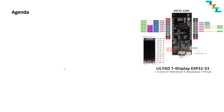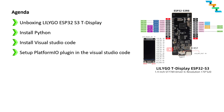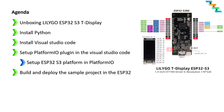We will see the following topics in the video. First, we will see about unboxing the Lilygo ESP32 S3 T-Display, then we will install Python, then Visual Studio Code, then set up the PlatformIO plugin in VS Code — our primary IDE for development. We will set up the ESP32 S3 platform in PlatformIO, then build and deploy a sample project from a GitHub repository.